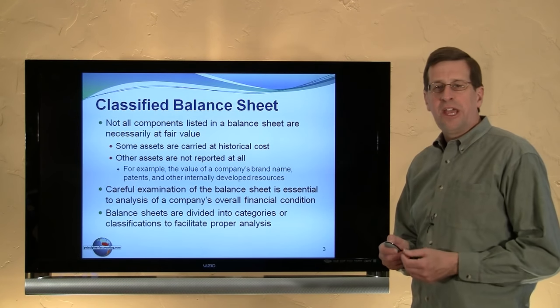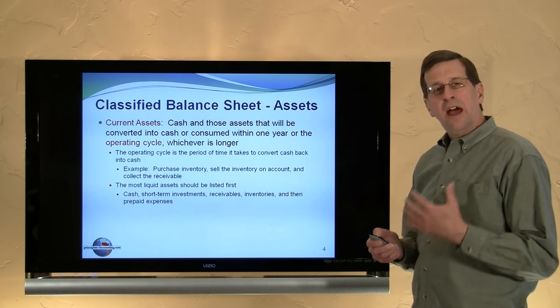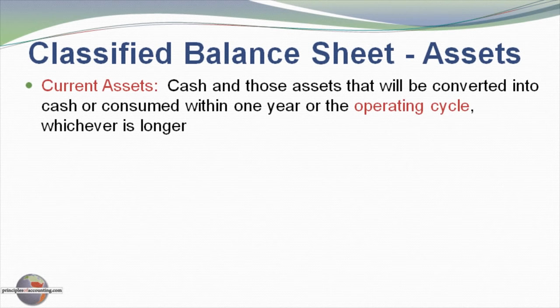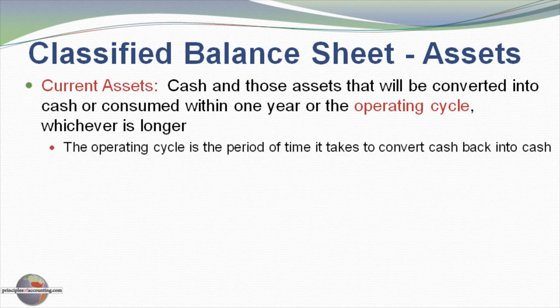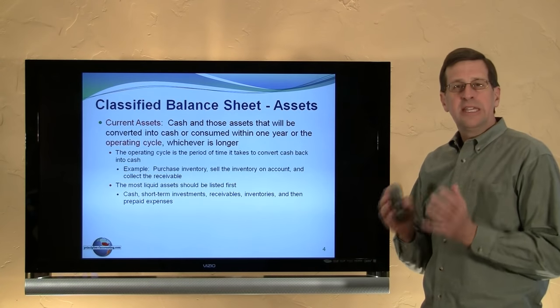Moving to the classifications in a classified balance sheet, thinking first about assets — we have five major categories for assets. The first of these is current assets. Current assets by definition are cash and those assets that will be converted into cash or consumed within one year or the operating cycle, whichever is longer. The operating cycle is the amount of time that it takes a business to turn cash back into cash. A business might take cash, buy inventory, sell inventory, accept a receivable, and then eventually collect the receivable. The length of time it takes to do that is the operating cycle.